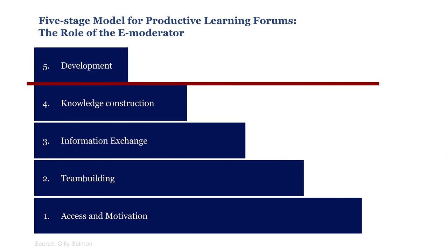As you can see in our version of Gilly Salmon's model, we think it is unlikely the majority of the MOOC audience will move past the red line into stage 5, development. That is where learners start to develop their own material and show meta-cognition skills. This stage is more suited to small groups. A few of the community leaders — those learners that are really active — might contribute.